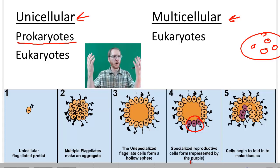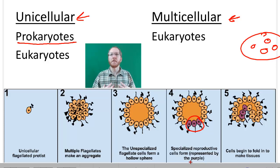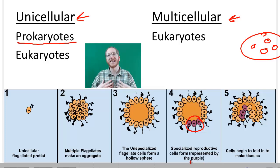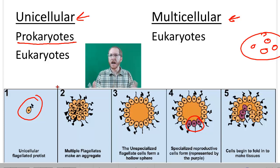We see this in organisms like us, where you have a heart with a specific task, lungs for gas exchange, kidneys that filter waste from the blood, and a digestive tract. All these different groups of cells do a specific task that allows us to live as one organism, because all of our cells depend on the other cells — the heart depends on the liver doing its job, the liver depends on the kidney, and so on. Whereas a unicellular organism has to do everything needed to live on its own, because there are no other cells to help.